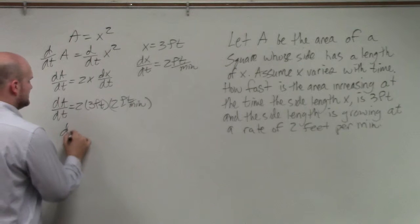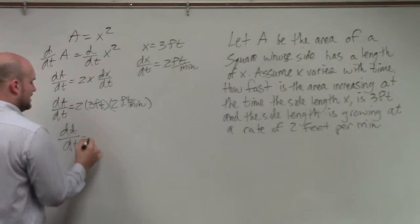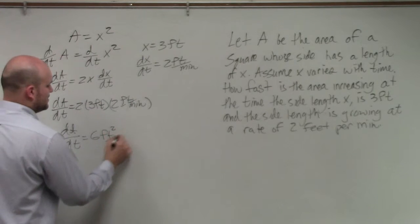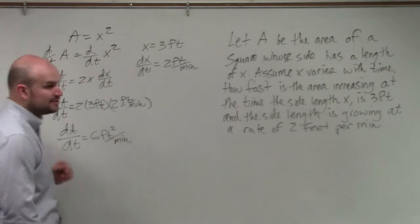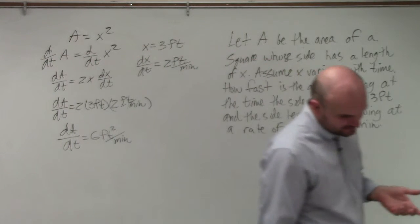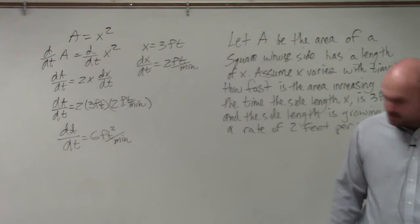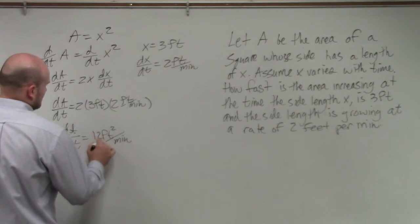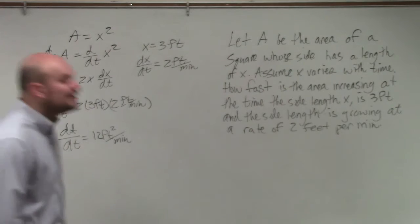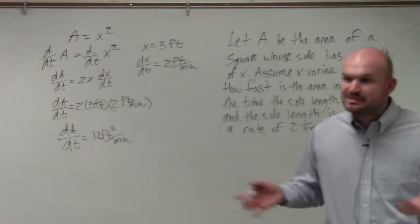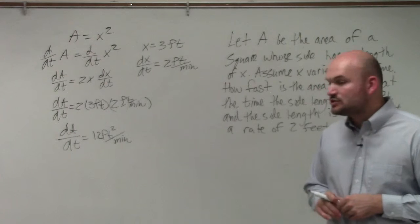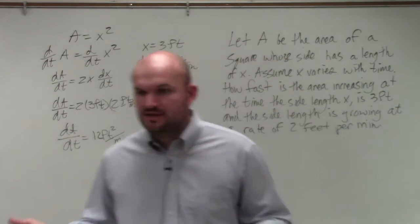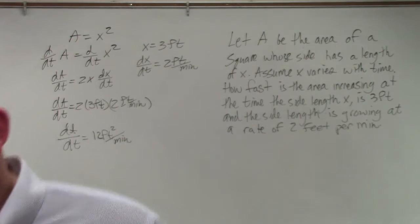So now I can just multiply this all out. And I get 6 feet. Feet times feet is feet squared over minute. So therefore, we can say that the—no, that's 6, 12. We can say that the area with respect to t with the side length increasing is changing at 12 feet squared per minute. And obviously, feet squared would make sense. It's the area. So we know that the area would be represented in squared. So here's the area.